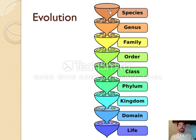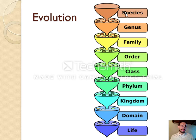We can think of this almost like a cladogram or phylogenetic tree, where the more specific the grouping, the more recent the common ancestor. A species is one of several in a genus; a genus is one of several in a family; and it gets more and more general as you move up the classification hierarchy.